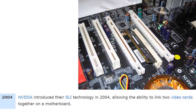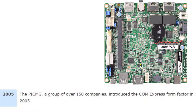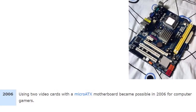Nvidia introduced their SLI technology in 2004, allowing the ability to link two video cards together on a motherboard. The PICMG, a group of over 150 companies, introduced the COM Express form factor in 2005. Using two video cards with a Micro ATX motherboard became possible in 2006 for computer gamers.